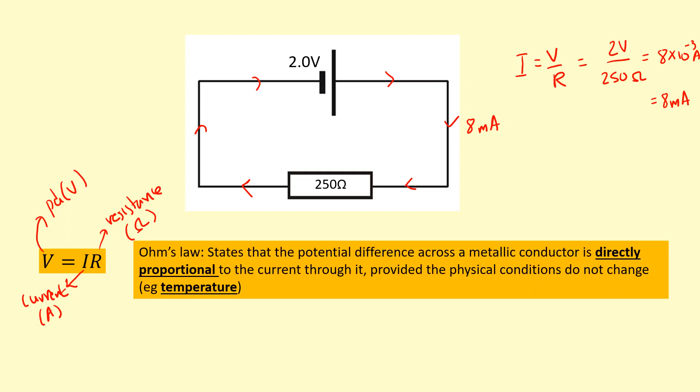So Ohm's law can also be written in words, and you need to know this definition. Ohm's law states that the potential difference across a metallic conductor is directly proportional to the current through it, provided the physical conditions do not change, for example, temperature.